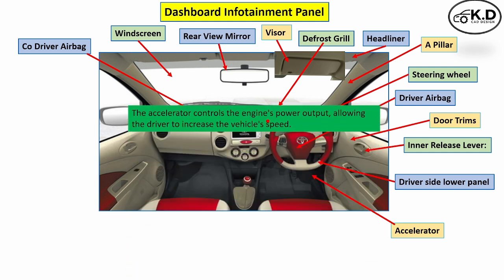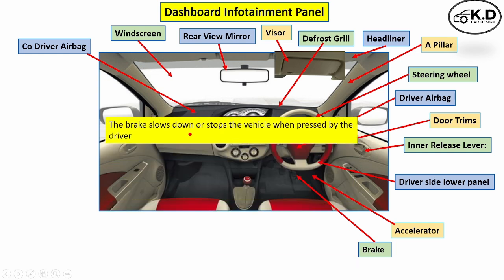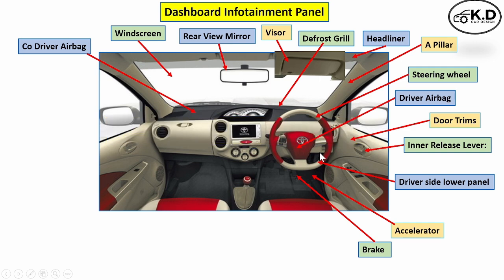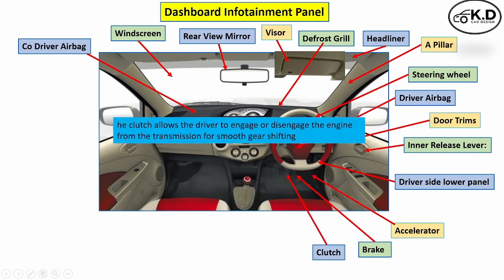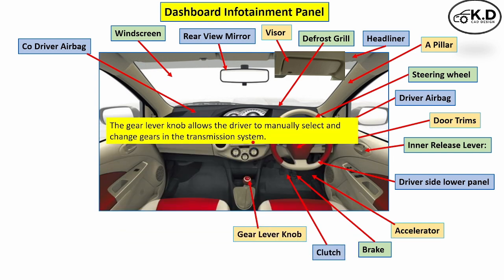The next part is the brake, which allows the driver by pressing to slow down or stop the vehicle. The next part is the clutch, whose function is to engage and disengage the engine power to the gearbox. The next part is the gear lever knob, whose function is to manually switch and change the gear.